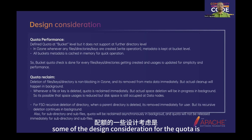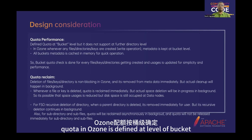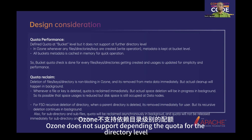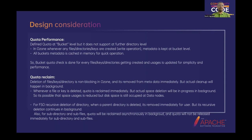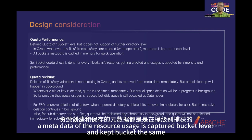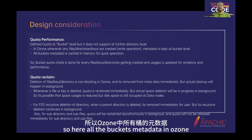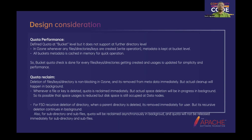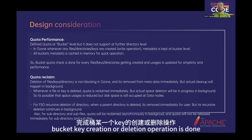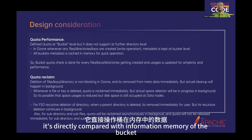Regarding design considerations for quota: quota in Ozone is defined at the granular level of a bucket. Ozone does not support defining quota at the directory level. Whenever a file, directory, or key is created, metadata of the resource usage is kept at the bucket level and compared against it. All bucket metadata in Ozone is cached in memory, so whenever a bucket key creation or deletion operation occurs, it is directly compared with the in-memory bucket information.